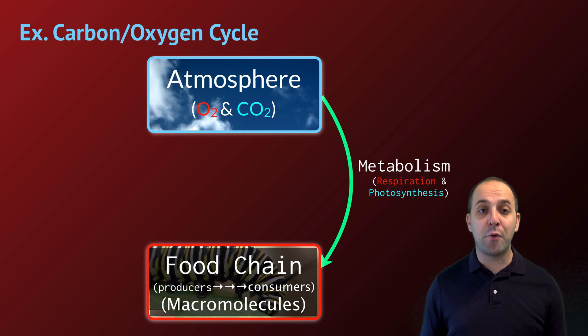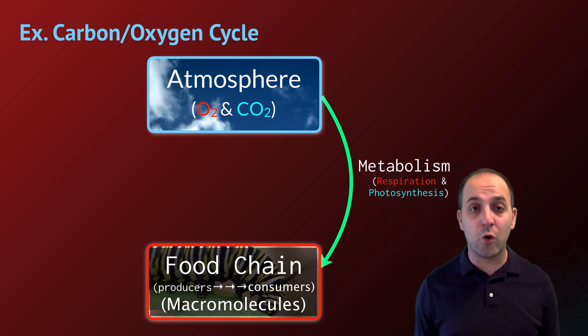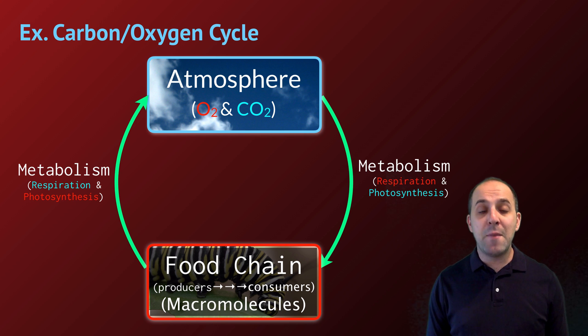And then there's going to be a series of processes that return that matter from the biosphere back into the abiotic reservoir. The specific details in terms of what the reservoir is and what those processes are are going to vary depending upon the substance. But it's a good idea to focus on the sort of overall plan here before we get into the specifics. So with that, let's talk about some of the specifics. We'll start with the carbon and oxygen cycle.